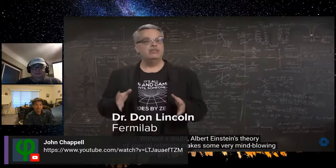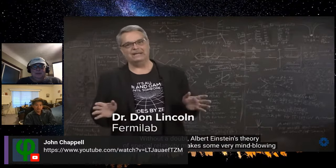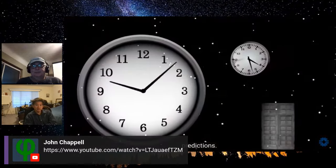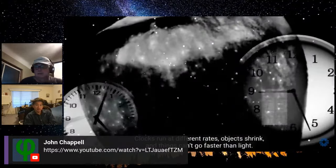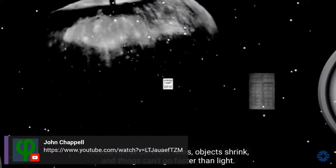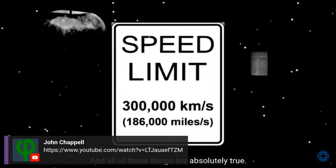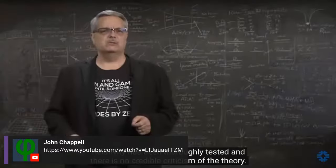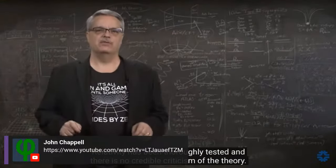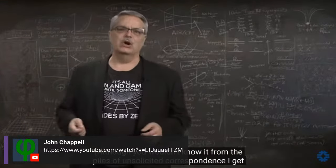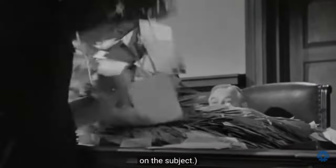Albert Einstein's theory of special relativity makes some very mind-blowing predictions. Clocks run at different rates. Objects shrink. And things can't go faster than light. And all of these things are absolutely true. Relativity has been thoroughly tested and there is no credible criticism of the theory, although you wouldn't know it from the piles of unsolicited correspondence I get on the subject.